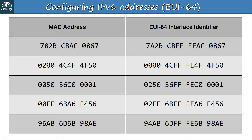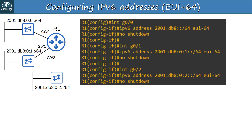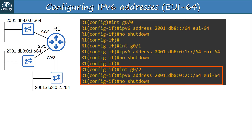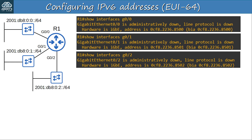Here's how to configure an interface using EUI-64. On G0-0, I used the command IPv6 address, followed by the network prefix 2001:DB8::/64, and then EUI-64. That tells the router to use this prefix plus the EUI-64 interface identifier to generate an IPv6 address. I also did the same on G0-1 and G0-2. I used SHOW interfaces to check the MAC address of each interface. Note that the MAC address of each interface is nearly identical — only the last digit is different — so their EUI-64 interface identifiers will be very similar too.